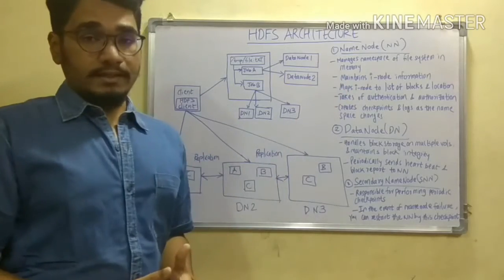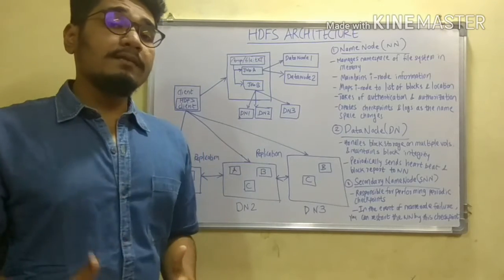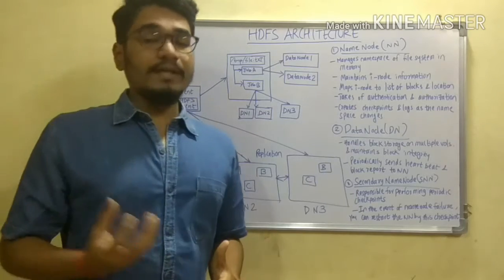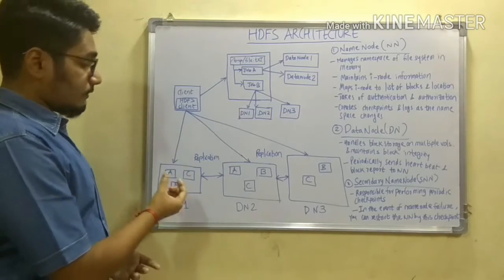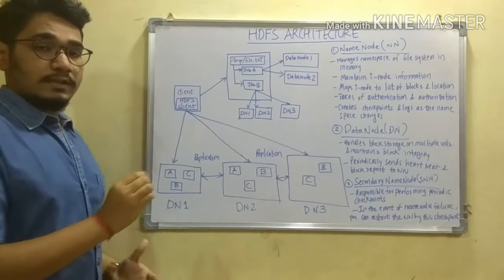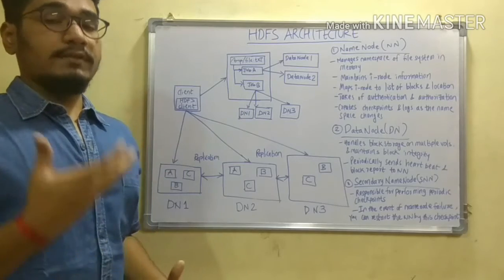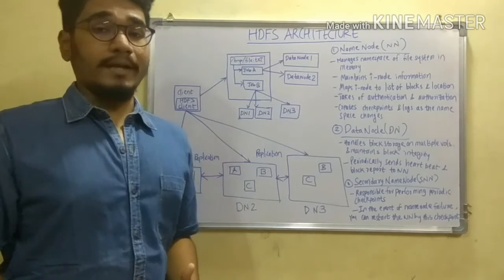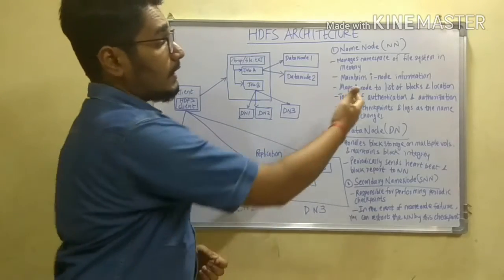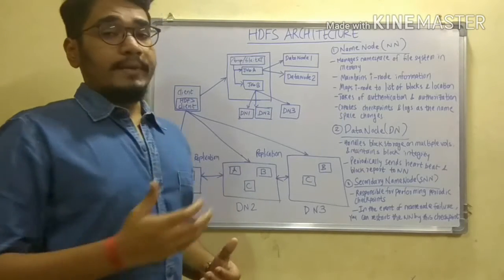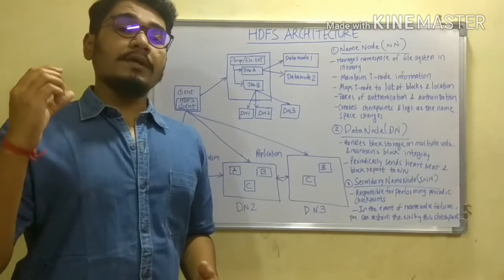The Name Node gives a namespace for the file space in memory within the Hadoop ecosystem. It maintains the inode information of the files in memory. An inode is unique to one particular file system — for example, if A is a node, it has one inode containing its metadata: when it was created, its file size, its format, and so on. The Name Node also maps these inodes to a list of blocks and their memory addresses.